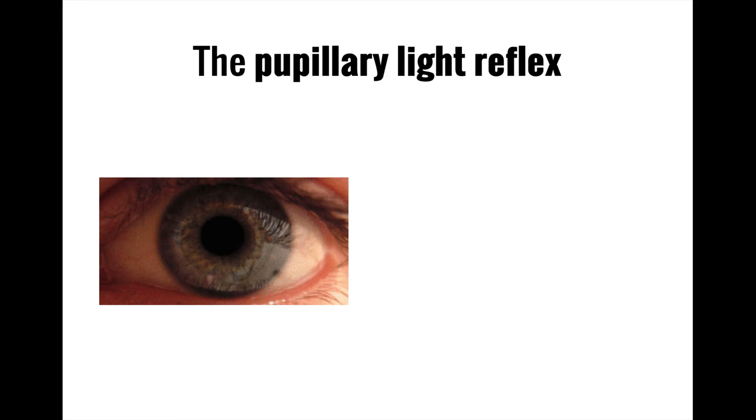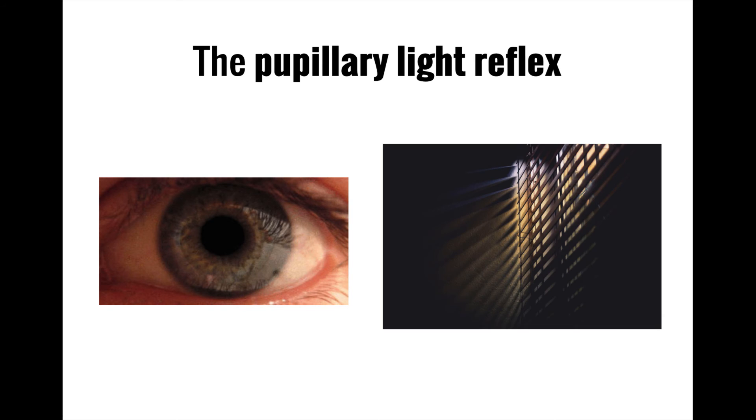In situations of low light, the pupils will dilate to allow more light in, a process known as mydriasis, which is controlled by the sympathetic nervous system. In contrast, when there is too much light in the environment, the pupils will constrict to reduce the amount of light entering, a process known as miosis, which is controlled by the parasympathetic nervous system.